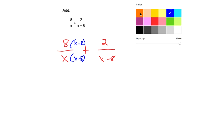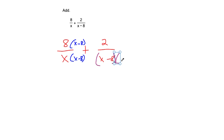So that's why I'm multiplying everything in the first fraction by x minus 8. Same thing over here. I'm going to multiply everything by x because that's the opposite fraction's denominator.